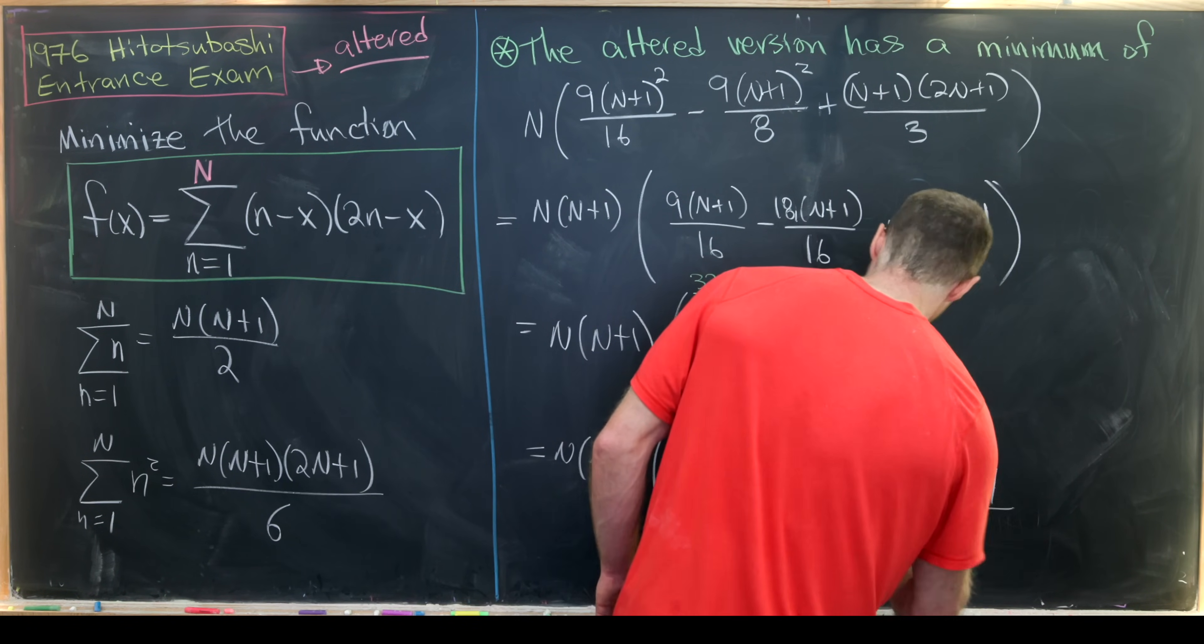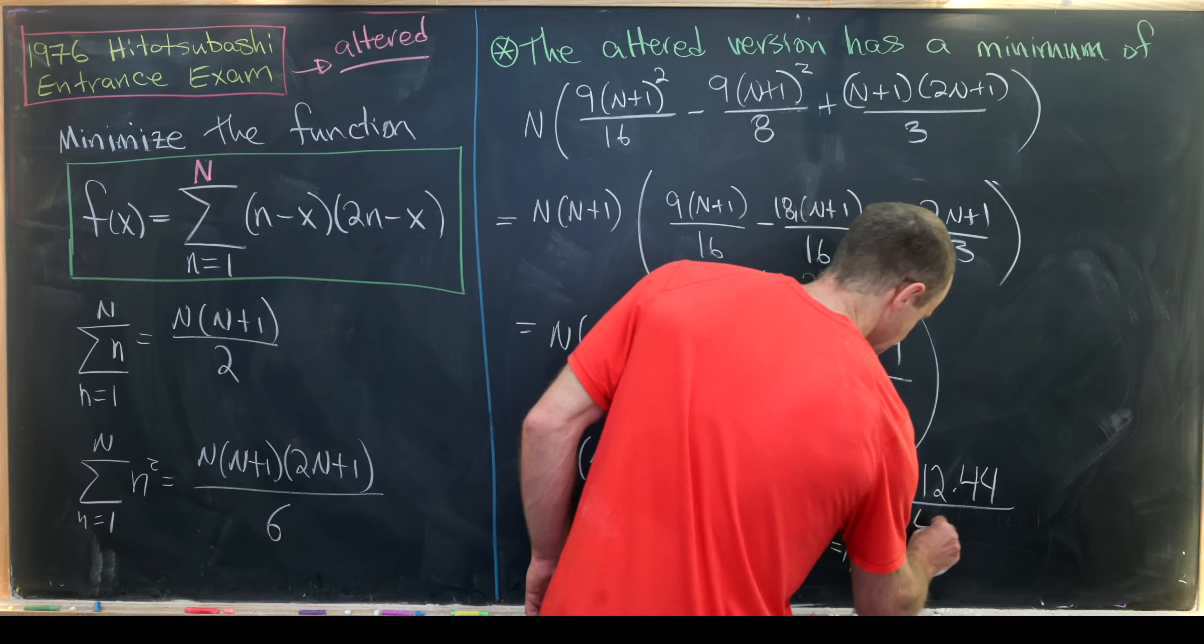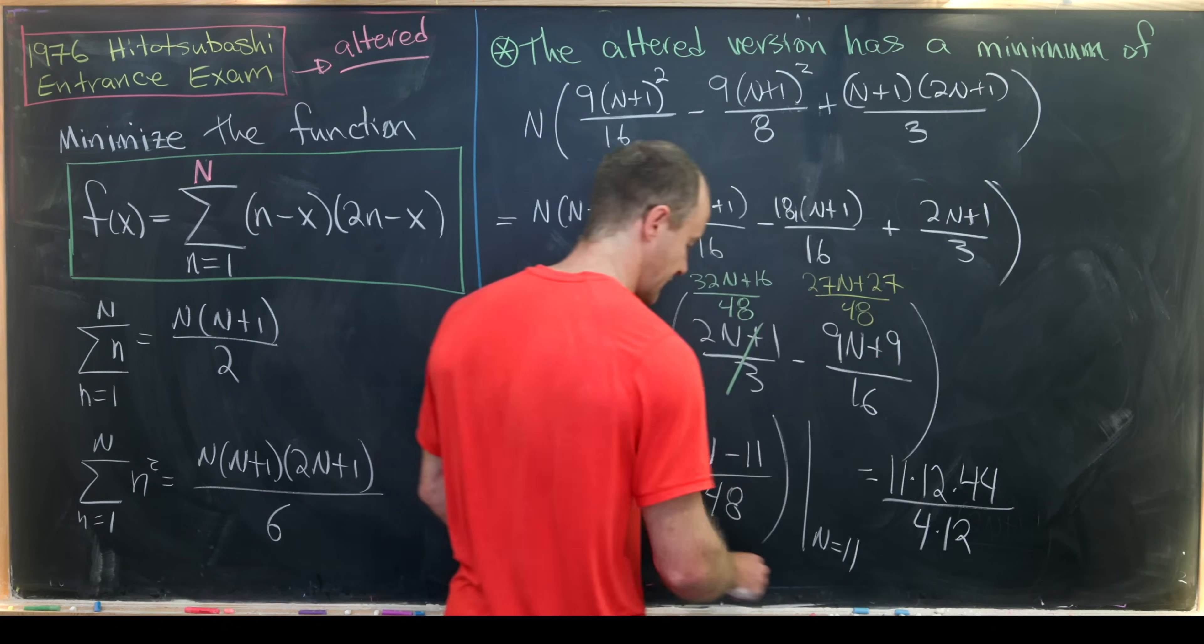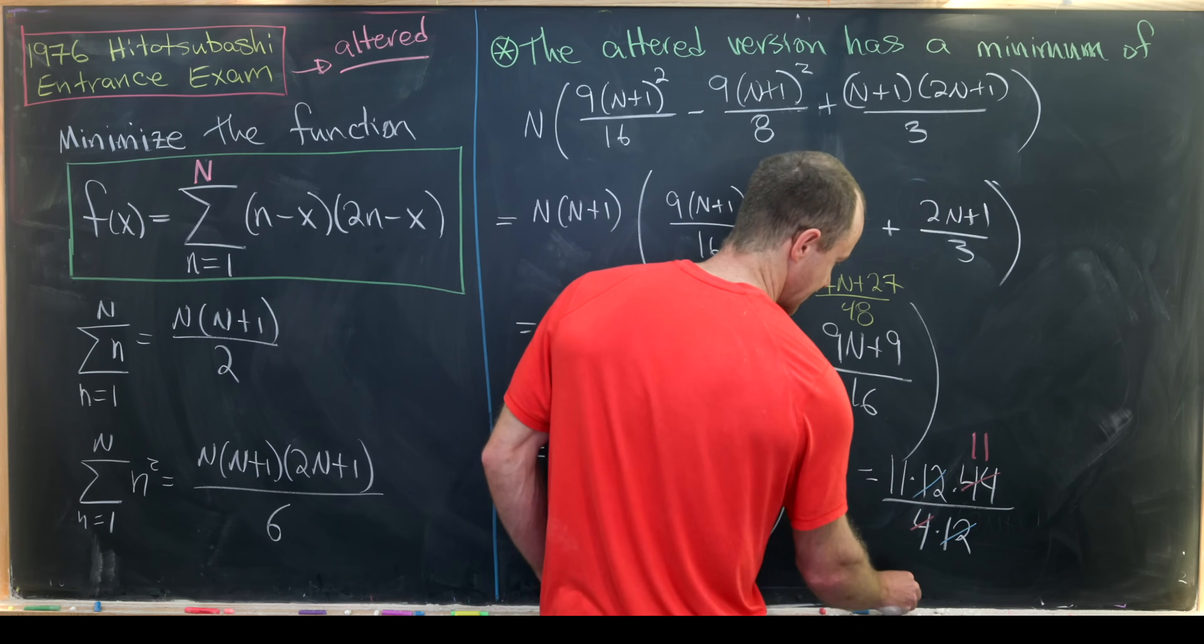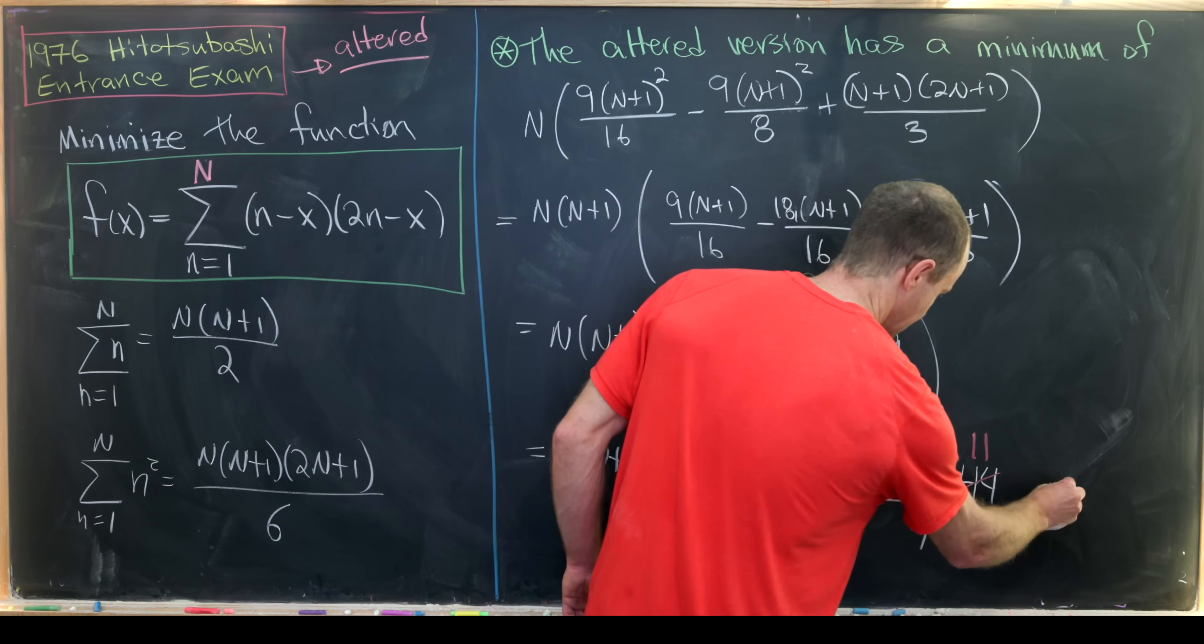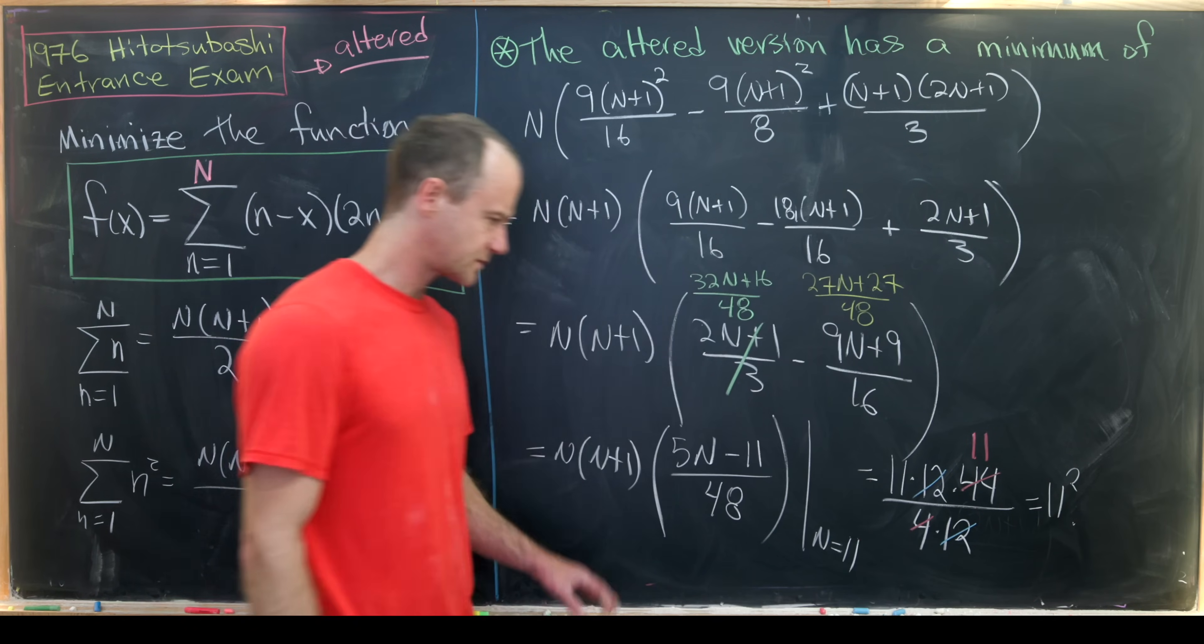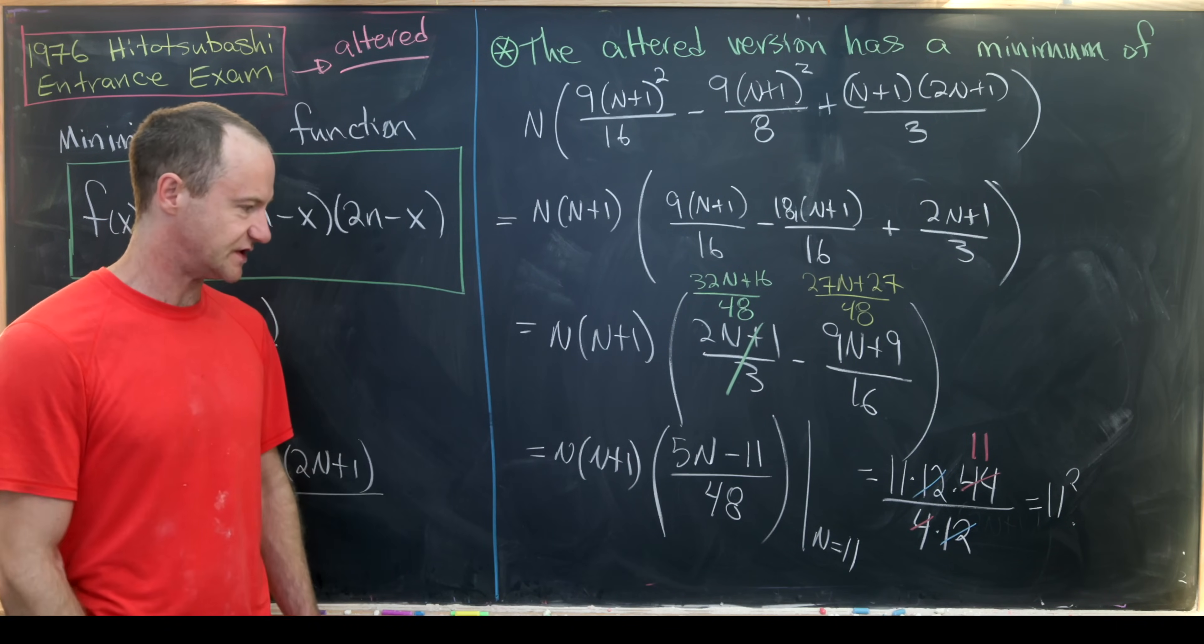Notice that this 4 will cancel this 44 down to 11. This 12 will cancel that 12 and we'll end up with 11². Now maybe my open question to you: are there any other values of capital N that make this collapse to something nice?